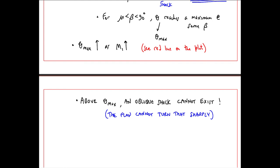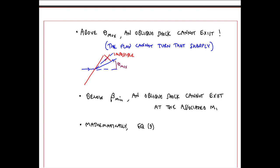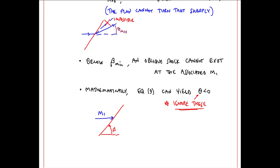Above theta max, an oblique shock cannot exist. In other words, the flow cannot turn that sharply. It is impossible to turn the flow any more than this. We can also say that below beta min, an oblique shock cannot exist at the associated Mach number. Mathematically, equation 9 can yield negative values of theta, but we will ignore these since they're not possible. In other words, you can have an oblique shock at some beta and some M1, where the flow turns at some negative theta. This is impossible.